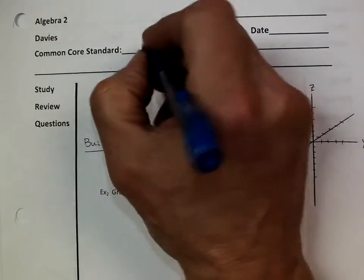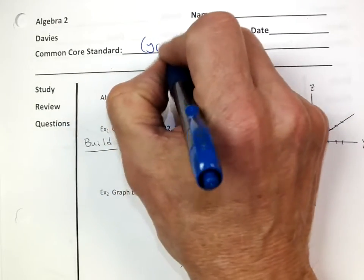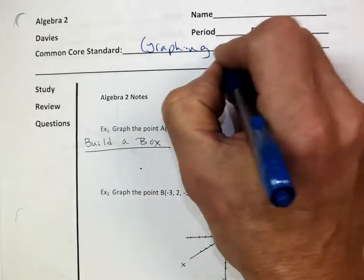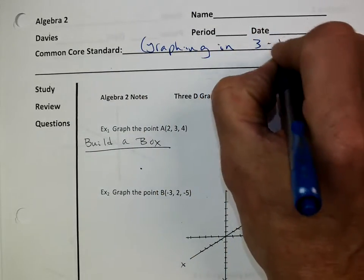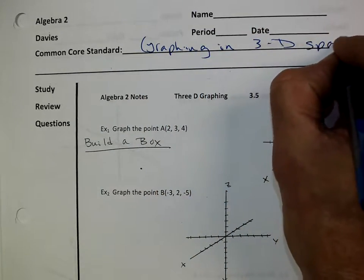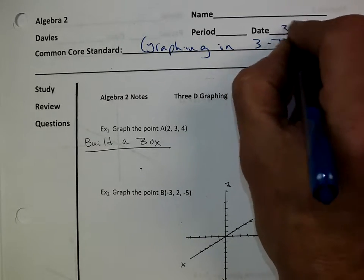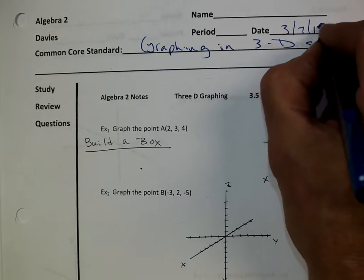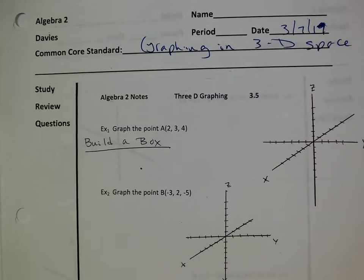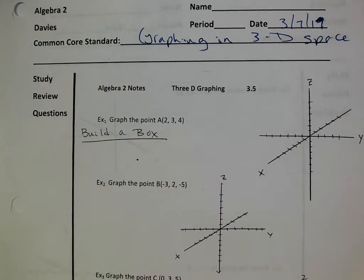We were really talking about graphing in 3D space. So if I had to graph the point (2, 3, 4), it's an actual point.